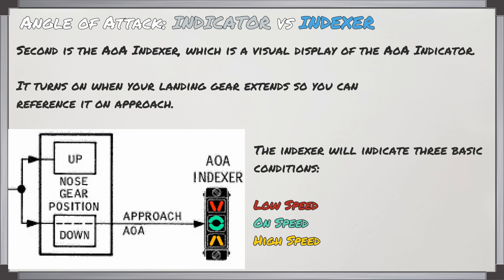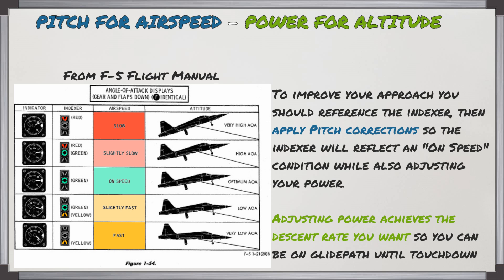The second is the AOA indexer, a visual display of the AOA indicator. The indexer turns on when your landing gear extends, so you can reference it while on approach. It will show you one of three basic conditions and how to correct for them: low speed, on speed, or high speed. To improve your approach, reference the indexer and apply pitch corrections to achieve an on-speed condition while also adjusting your power. This is the pitch-for-airspeed and power-for-altitude concept.